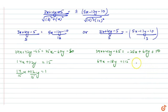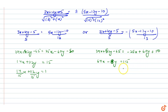Correction: in the second case, the y-term is +52y, making it −8y, and the result is 64x − 8y = 115, so (64/115)x − (8/115)y = 1.